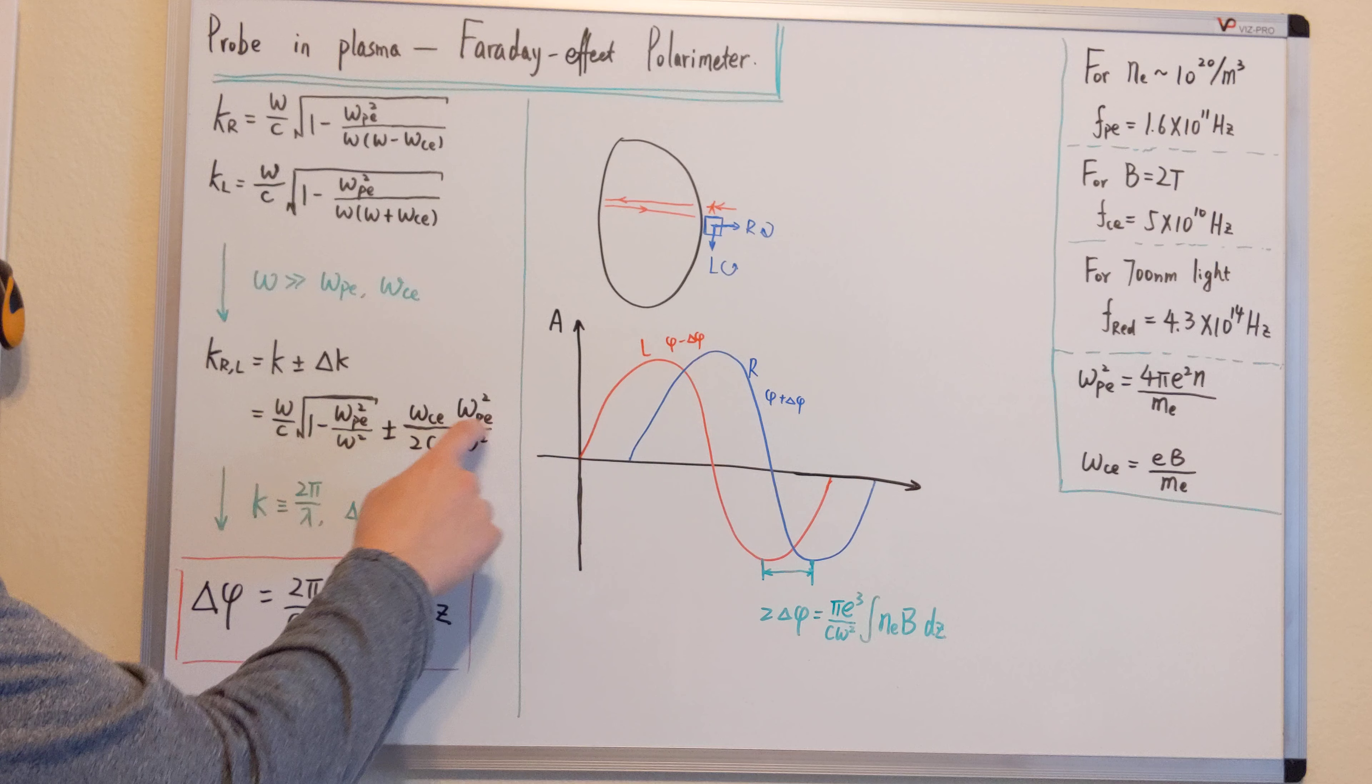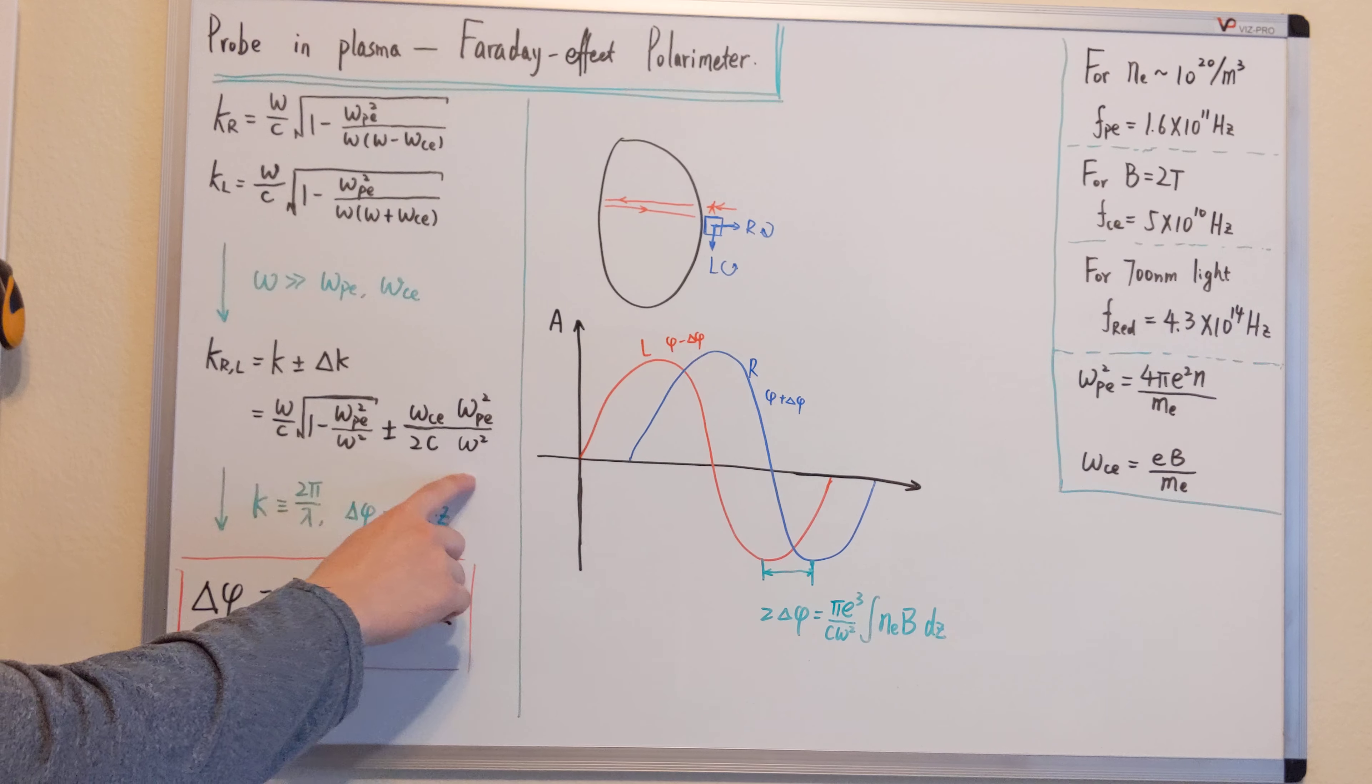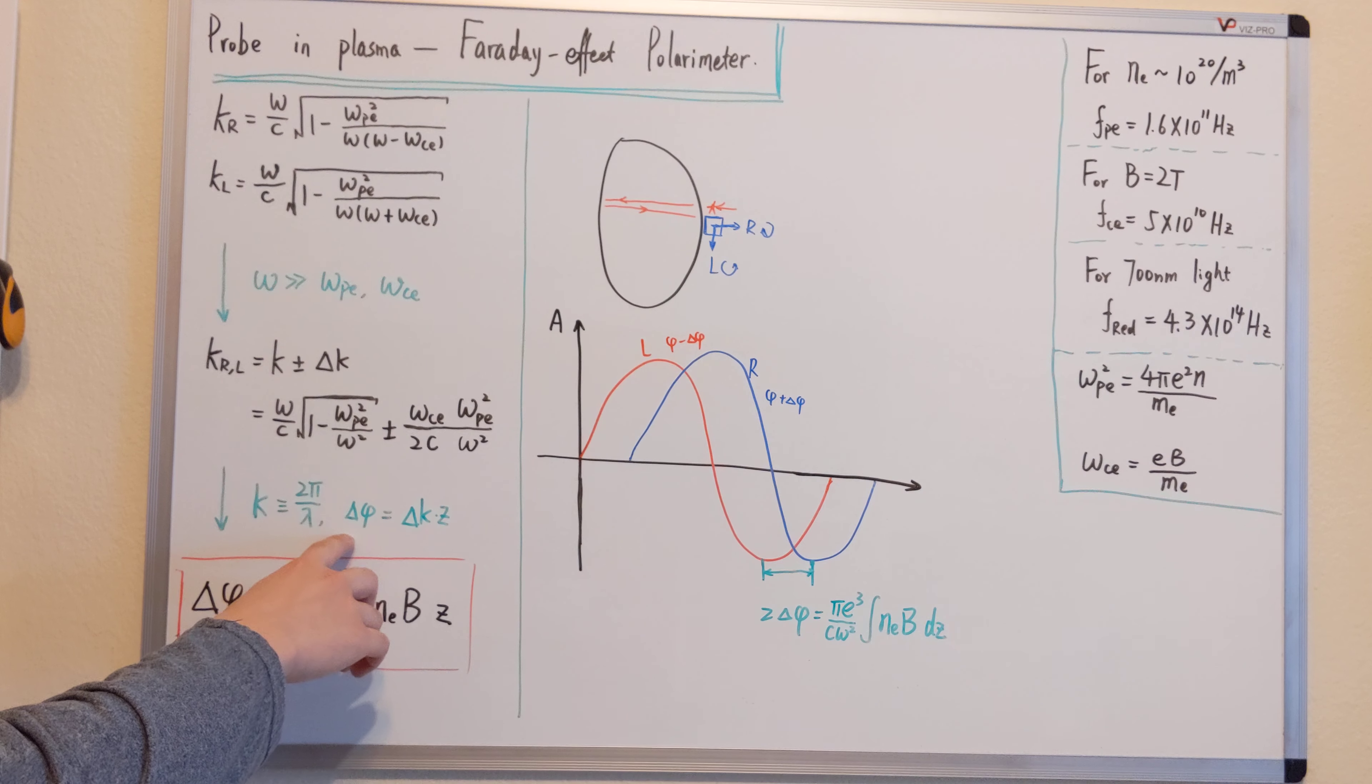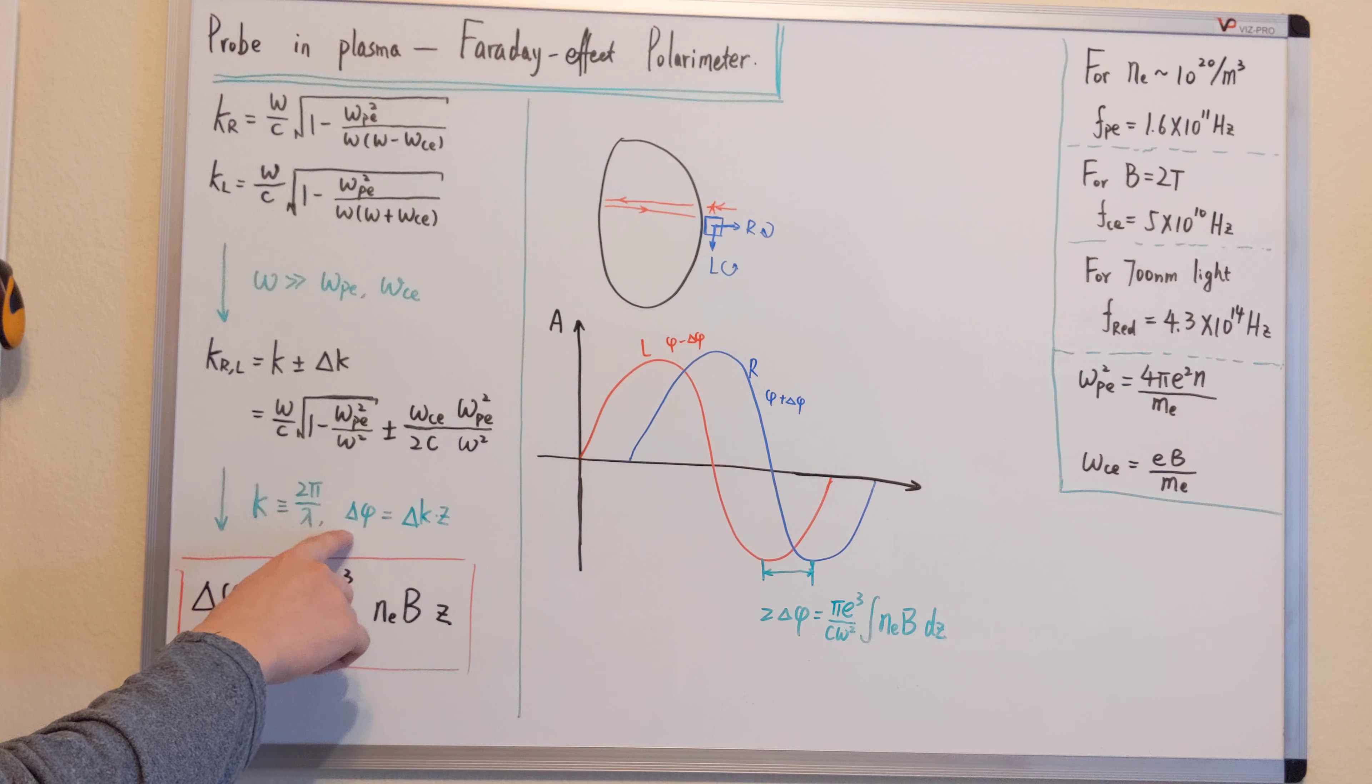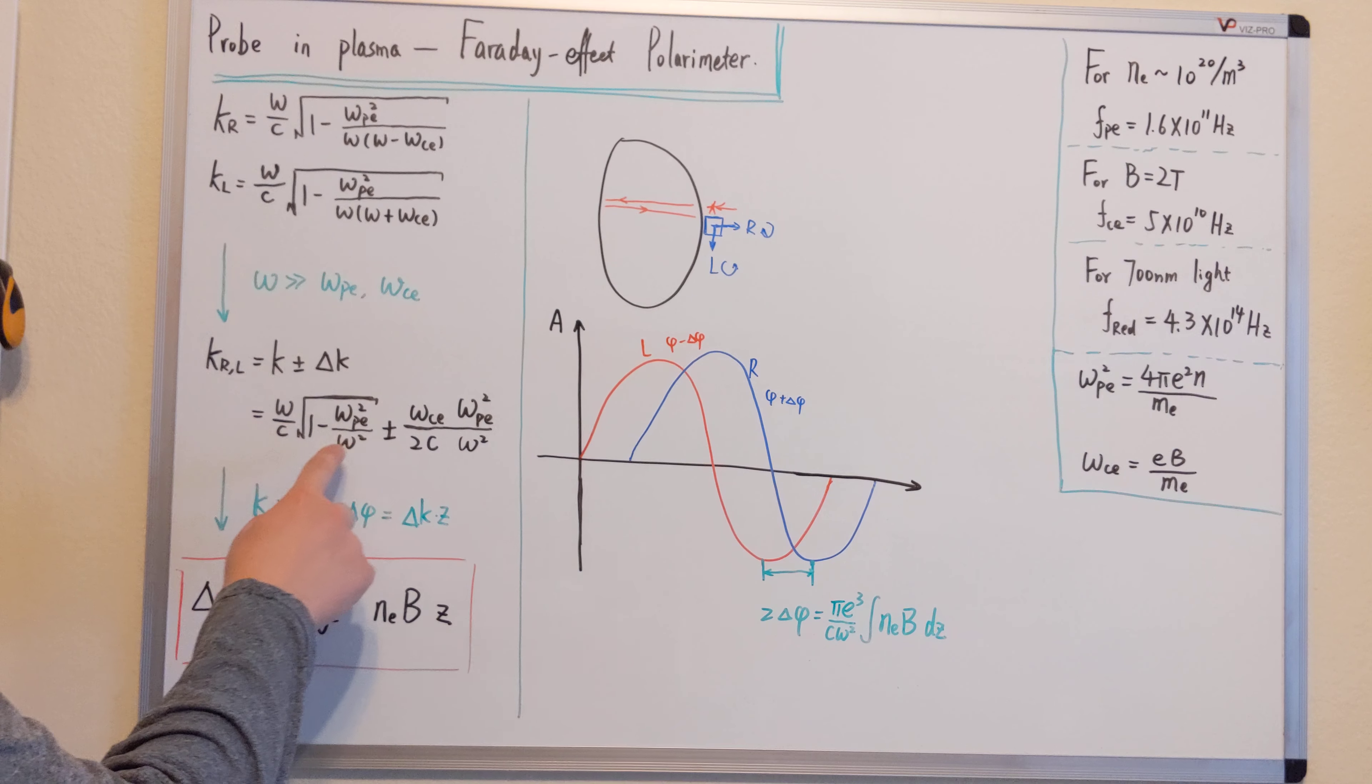This is delta k. And as we know, the definition of a wave number is 2 pi over lambda. So if they have a different wave number, meaning after traveling in a location, a certain distance, they will have a certain phase difference. So from that, we know that for traveling the distance z, we have a phase difference delta phi equals delta k z.